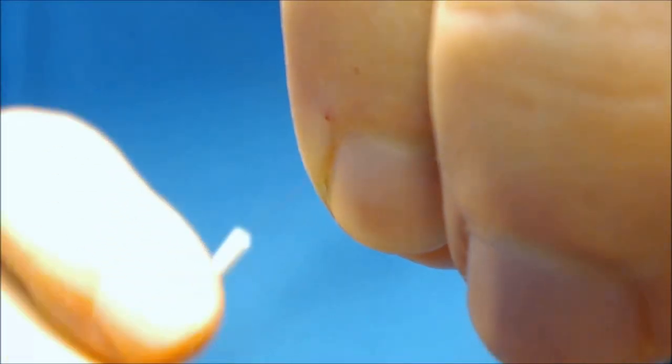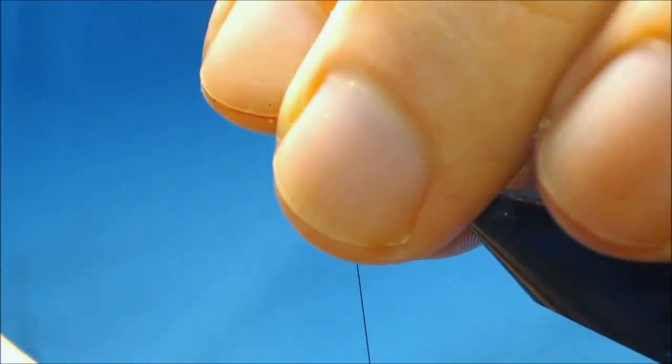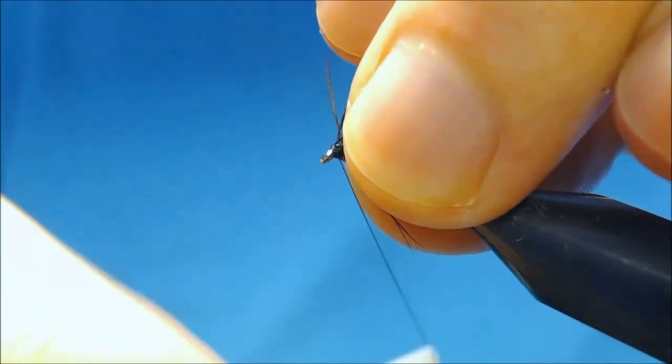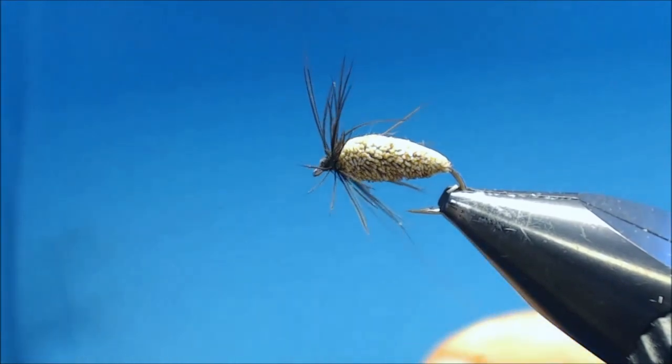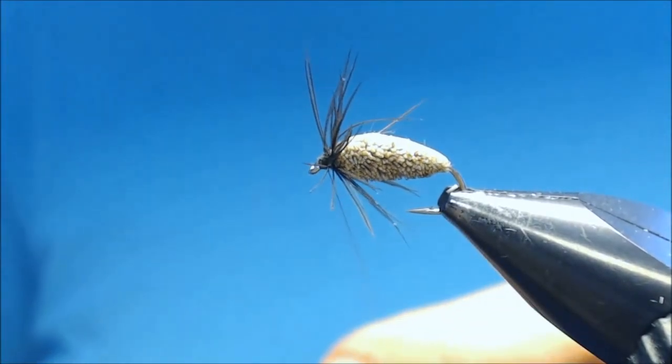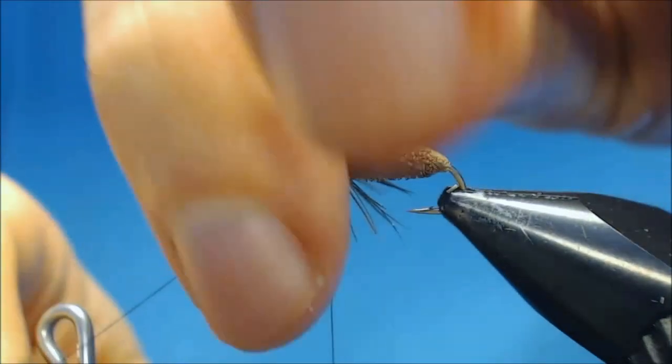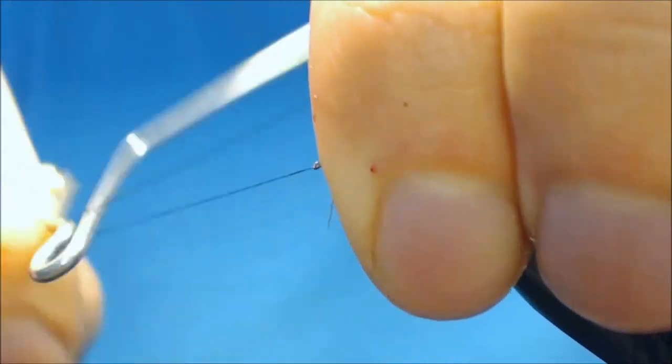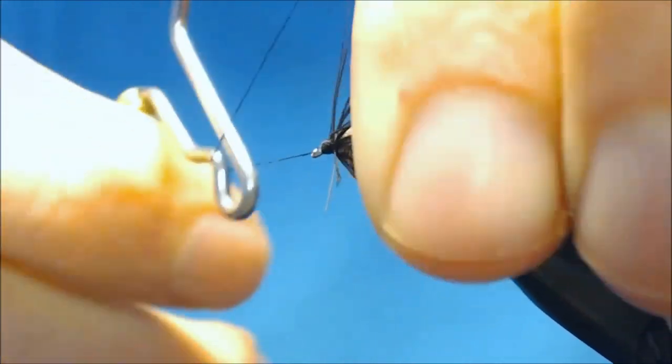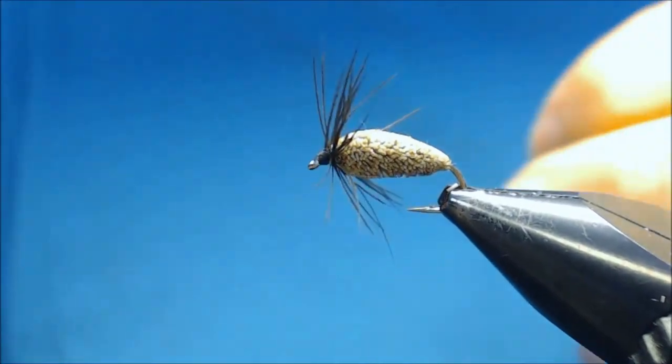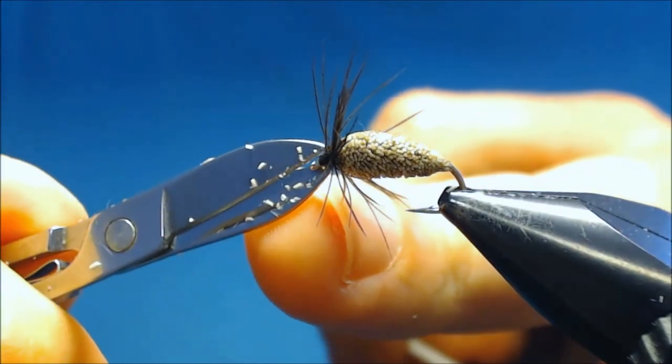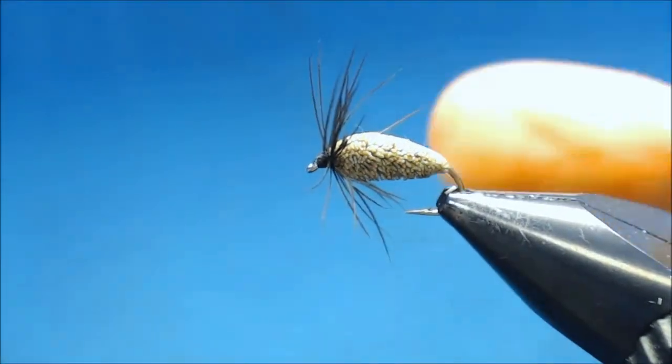Then pull everything back so it's facing forward. And build up a little head. And whip finish. One, two, three times. Pull tight on the thread. And cut the thread.